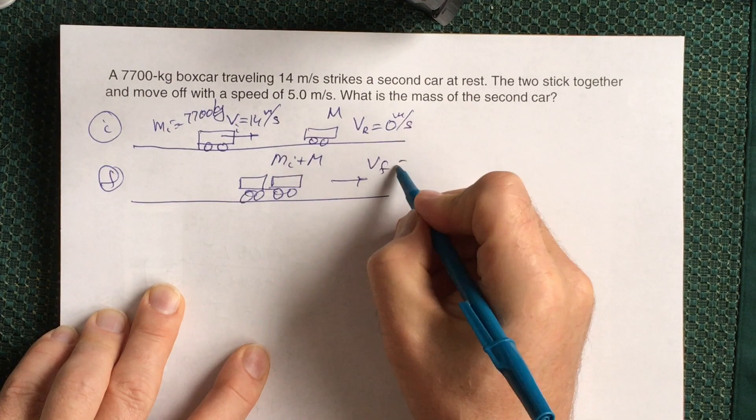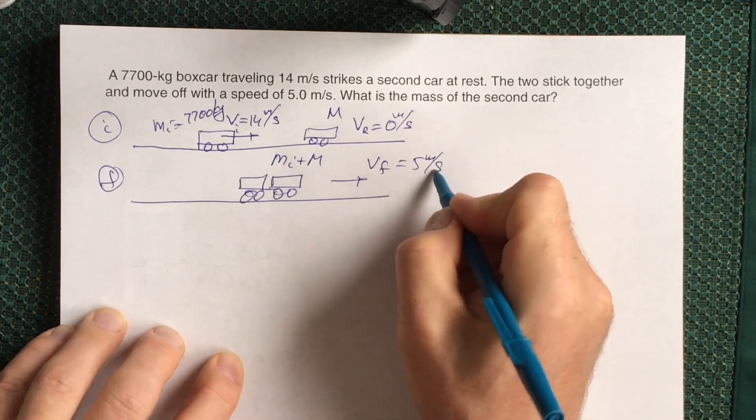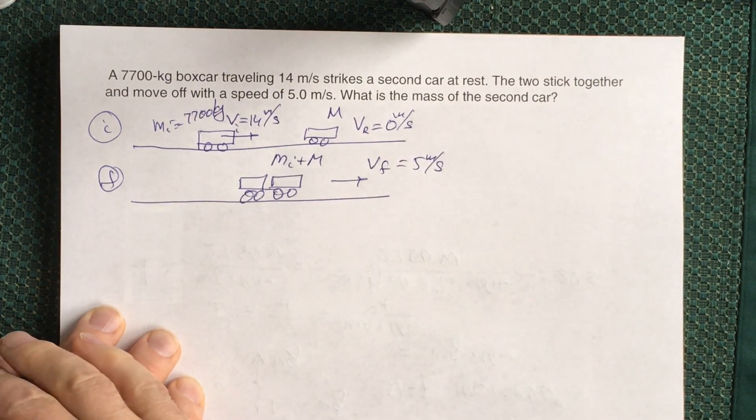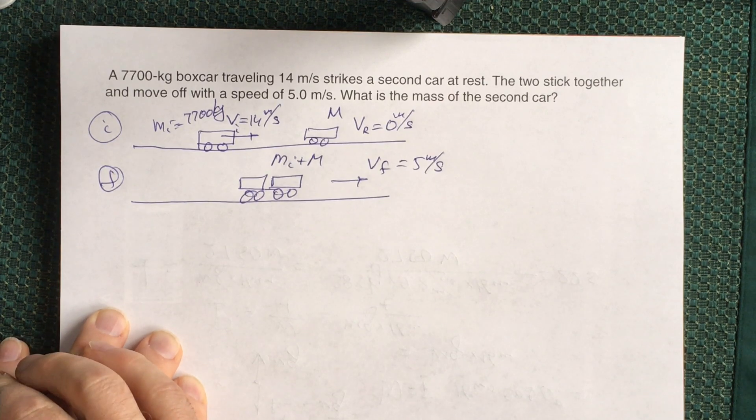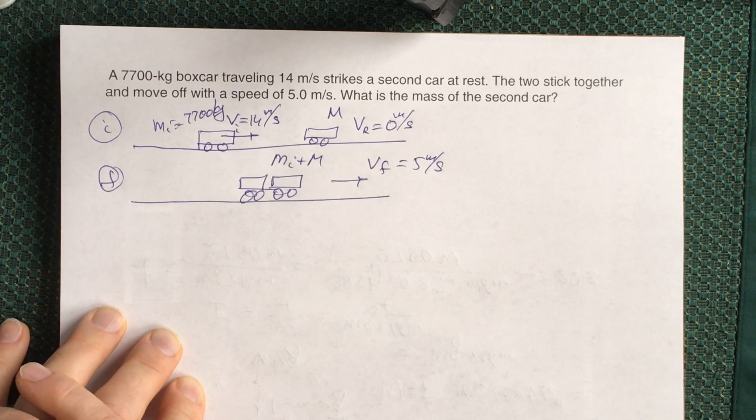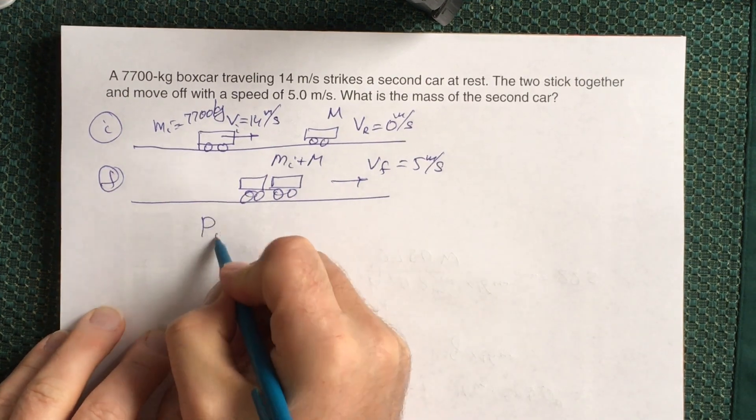Because we have rolling cars and the rolling friction force is negligible—very small—we can neglect this. So we can apply momentum conservation and claim that P initial equals P final.